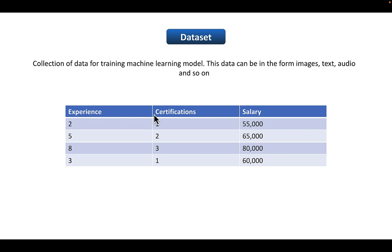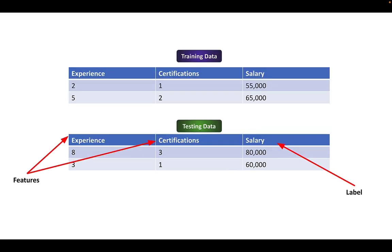For the salary prediction example, we need to collect the experience, certification, and salary of a number of people — this process is called dataset collection. After collecting that data, we split it into multiple parts, the main two being training data and testing data. On training data, we train our machine learning model, and on testing data, we test our model after training. The column we are predicting is called the label, and the columns using which we predict this label are called features.